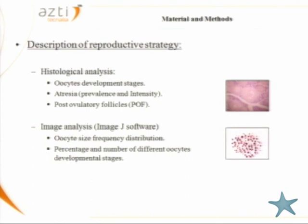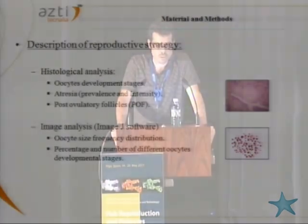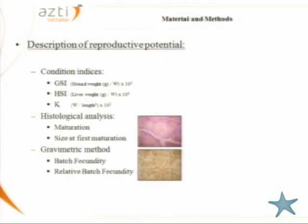For the description of reproductive strategy, we applied histological analysis to define the oocyte development stages for classification, to determine atresia, and to identify post-ovulatory follicles. We also applied histological image analysis software for oocyte size frequency distribution and to analyze the percentage and number of different oocyte development stages. For the description of reproductive potential, we focused on gonadosomatic index, hepatosomatic index, and condition factors. We used histological analysis for seasonal ovarian development and to estimate size at first maturation, and the gravimetric method to estimate batch fecundity and relative batch fecundity by length and weight, as well as variation during the spawning season.